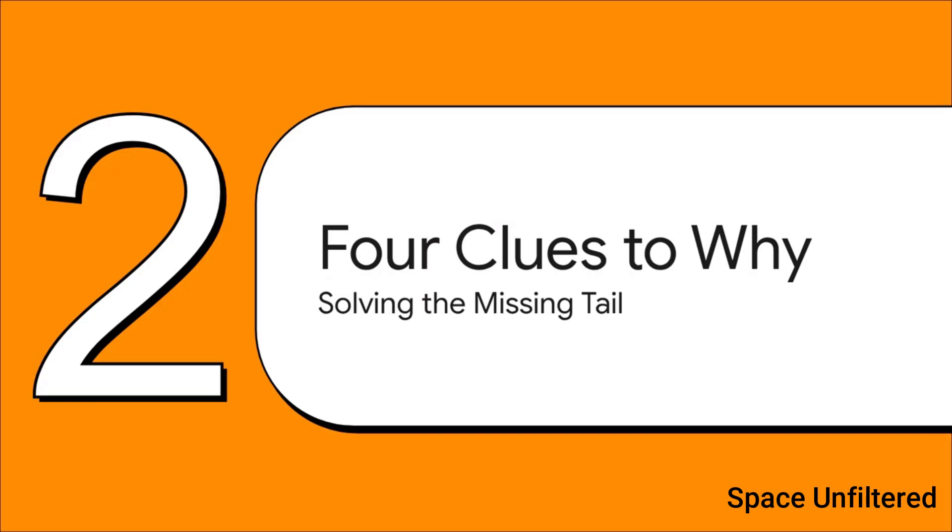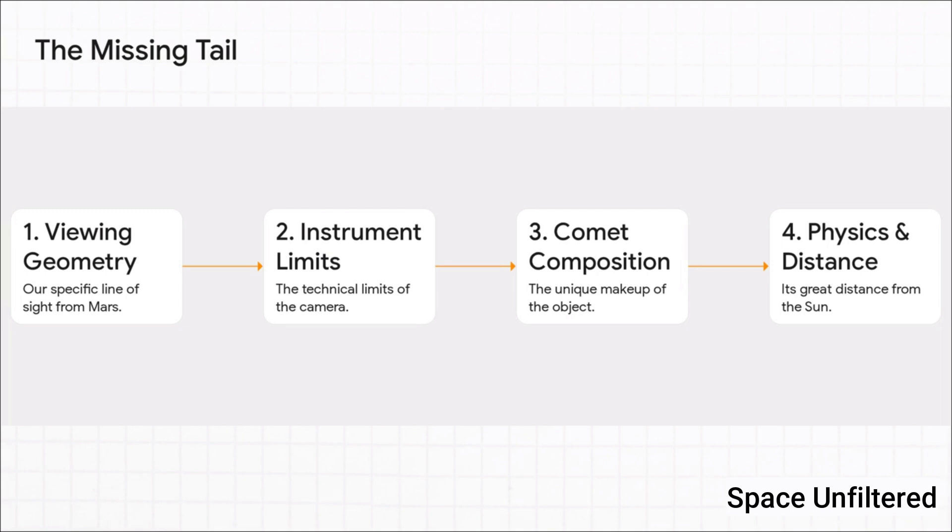All right, so if the comet definitely had a coma, where was its tail? Well, the answer isn't just one simple thing. It's actually a combination of four key clues that, when you put them all together, solve the mystery. The explanation really breaks down into four parts: first, the viewing geometry; second, the technical limits of the camera; third, the comet's own unique chemical makeup; and finally, the simple physics of its distance from the sun.